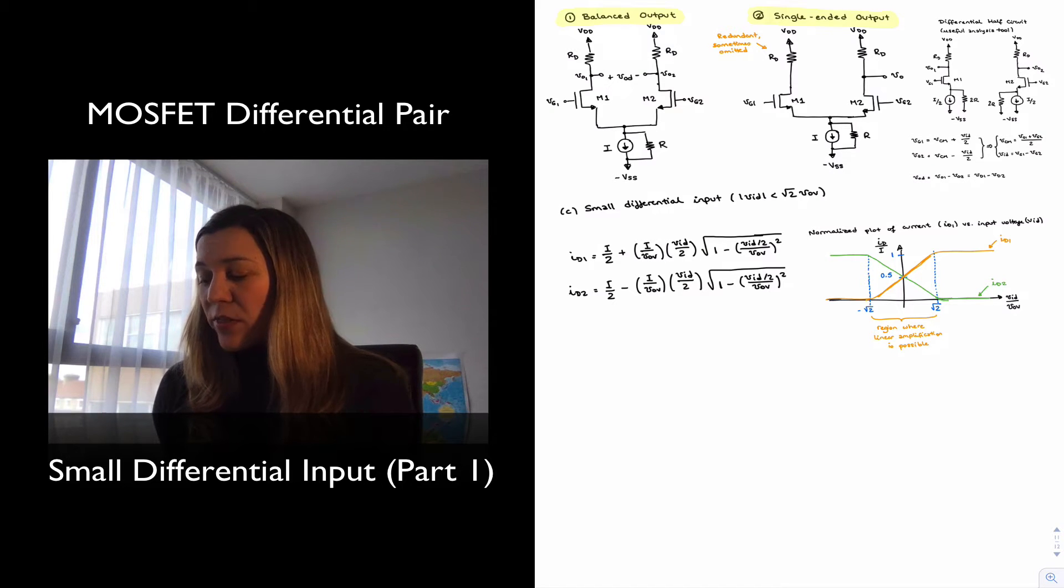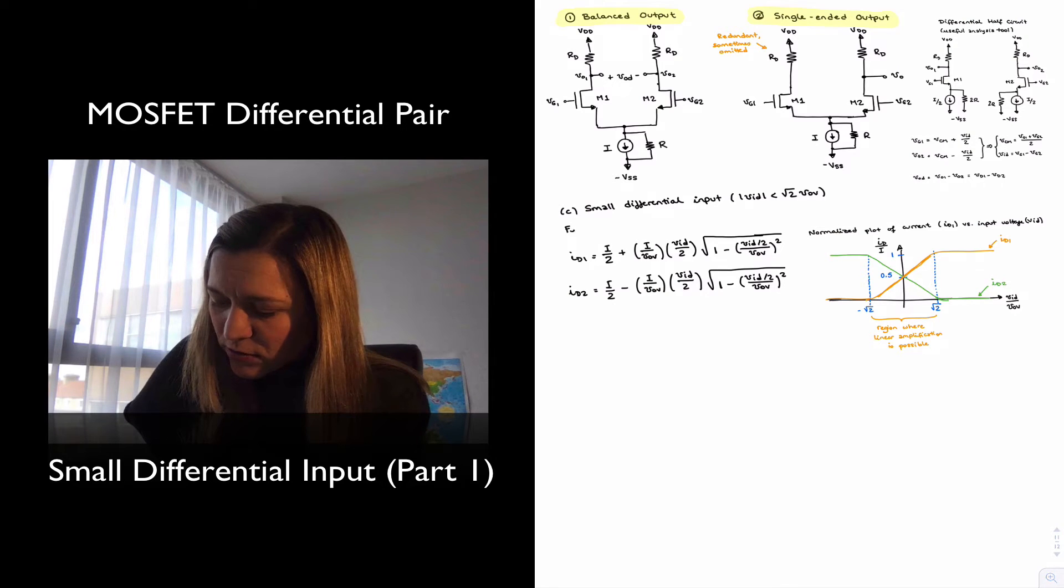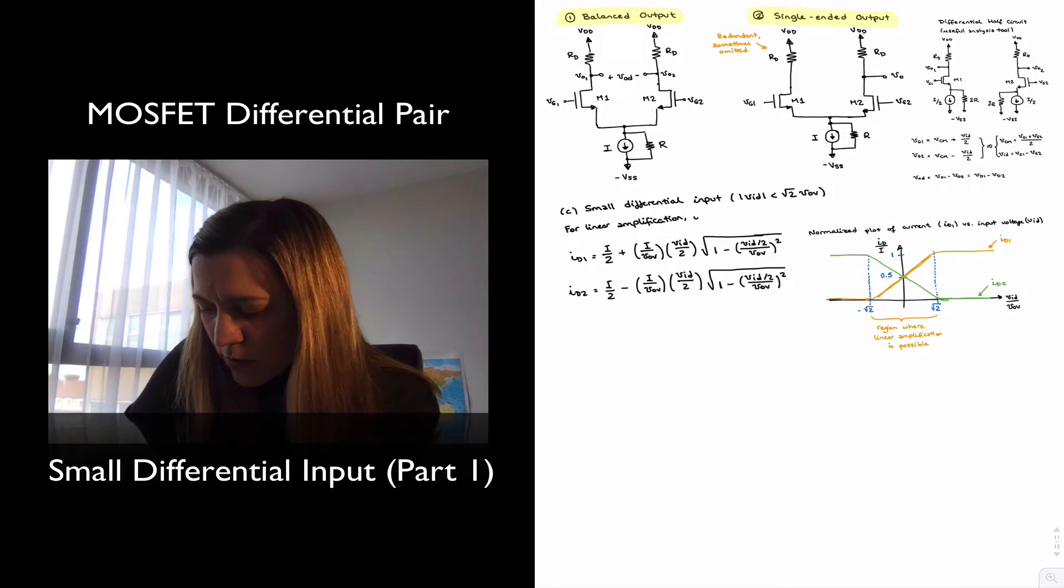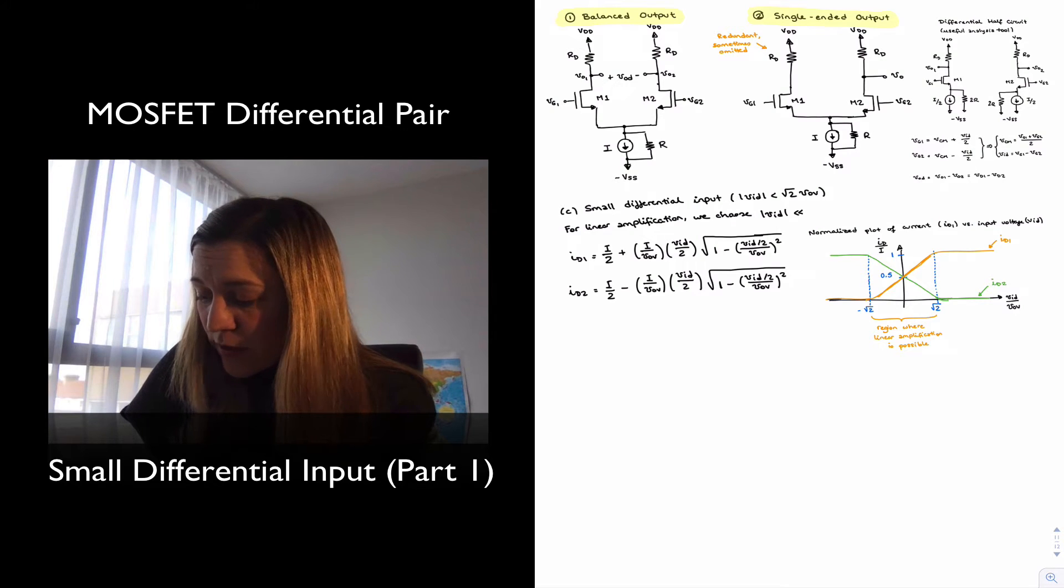Within that region between VAD over VoV being minus square root of 2 to square root of 2, the functions are quasi-linear. We can see that there is an almost linear behavior, but to approach the edges, it becomes less and less linear. And so we want to be far from those edges. So typically, for linear amplification, we are going to choose a VAD value that is less than or much smaller than VoV.